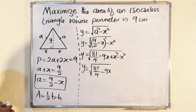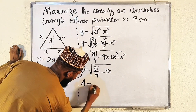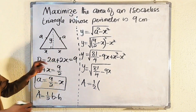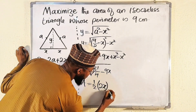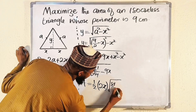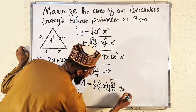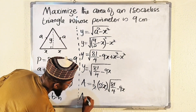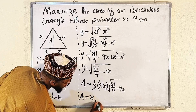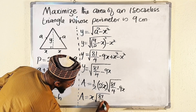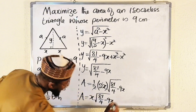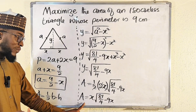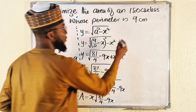Let's plug everything back into the area formula. Area = (1/2) × 2x × √(81/4 − 9x). The 2 cancels, so Area = x × √(81/4 − 9x). Since this is an optimization problem, to find a critical point we must differentiate the area with respect to x.